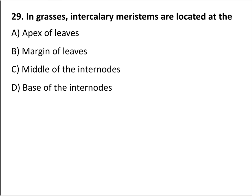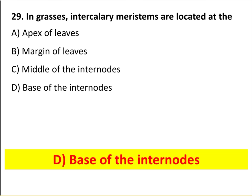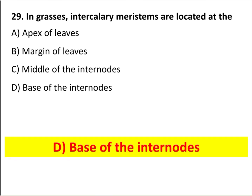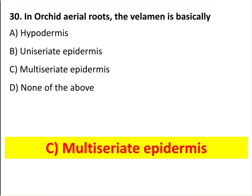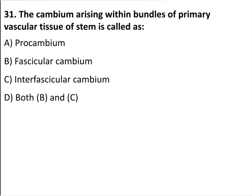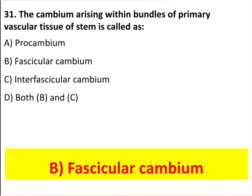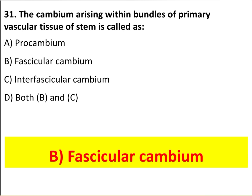In grasses, intercalary meristems are located at the base of the internodes. In orchid aerial roots, the velamen is basically a multiseriate epidermis. The cambium arising within the bundles of primary vascular tissue of stem is called fascicular cambium.